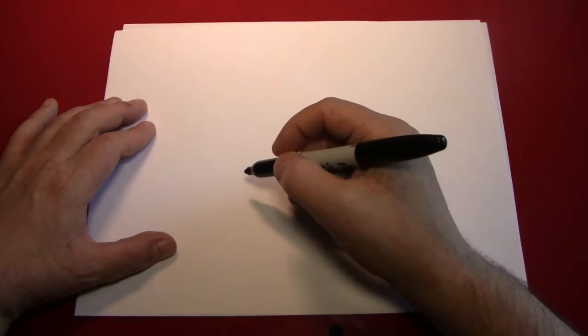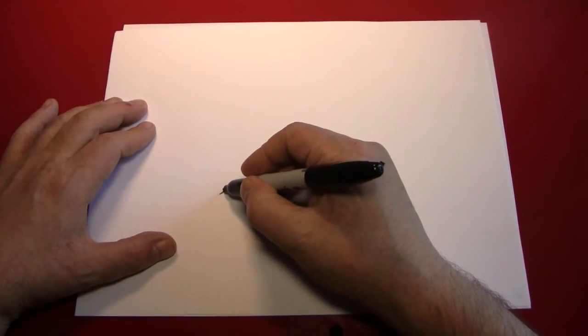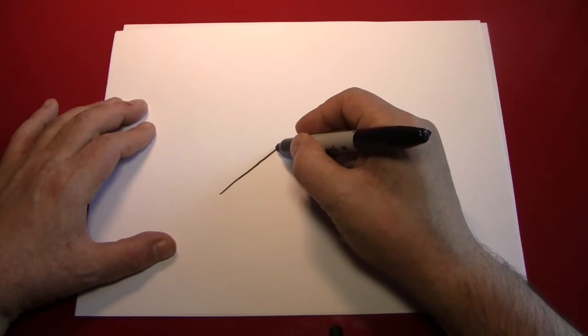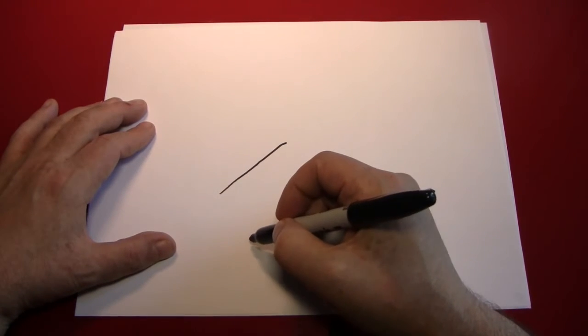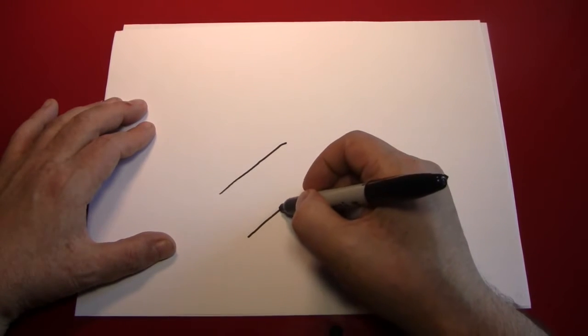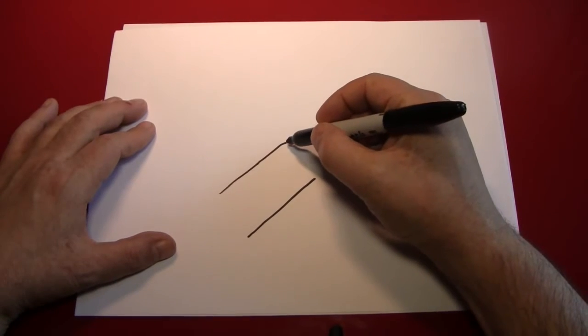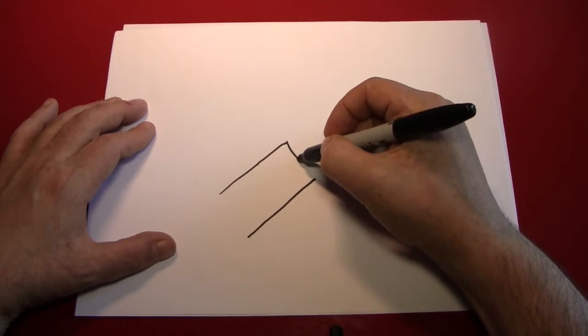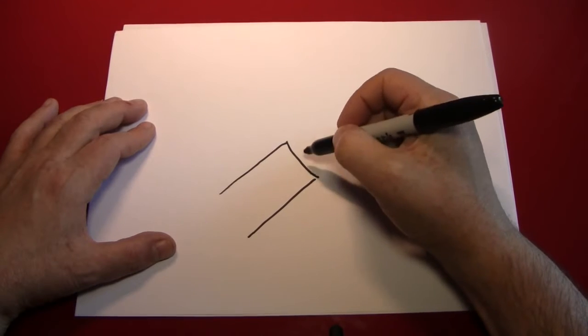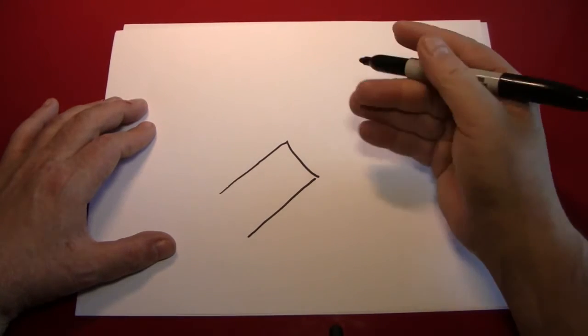I like to start drawing a cartoon hand by making the sleeve. This would be a standard shirt sleeve. Simply draw the sides and then connect it with a slightly curved line that curves towards you, so to speak.